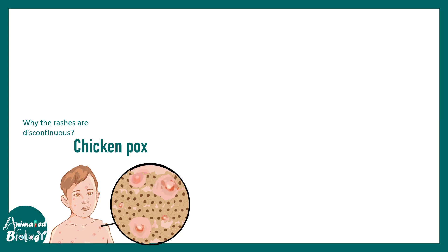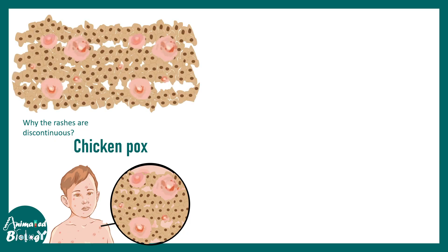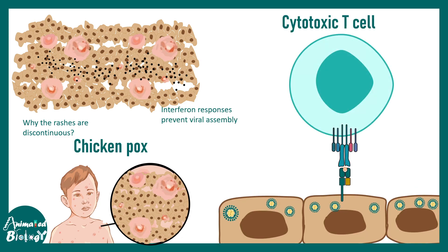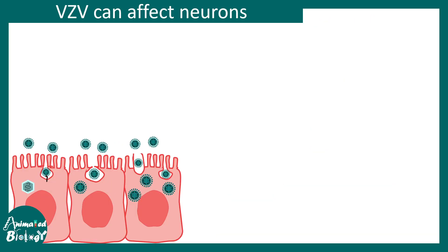The rashes in chickenpox are discontinuous because the skin also has an interferon response which prevents the spread of the virus. Additionally, cytotoxic T-cells can recognize class I MHC-positive viral peptides on the surface of skin cells and secrete perforin and granzyme, leading to apoptosis of infected cells.